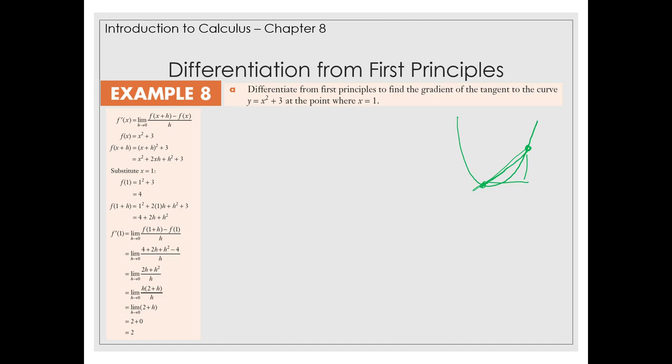The problem with that is the gradient is actually changing, and so depending on how far apart your two points are, your average might actually be rather inaccurate. So what happens with differentiation is we start to make those two points closer and closer together, and see what happens as the gap between these two points gets so small that it might as well be zero. That's what the first principles part is.